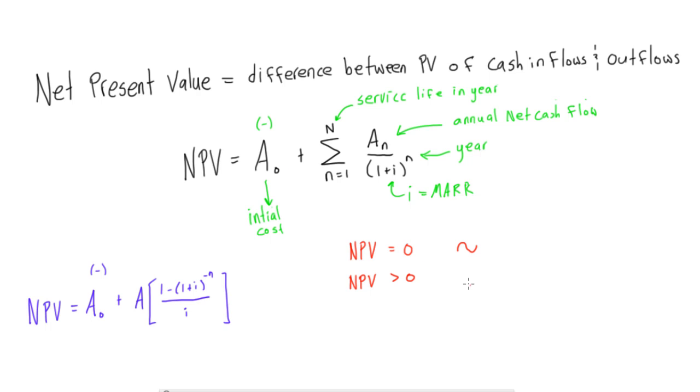So you should definitely accept this project. And if you're faced with a decision where you had two projects to choose from, one of them had net present value of zero, one of them was greater than zero, obviously you want to take the higher one.